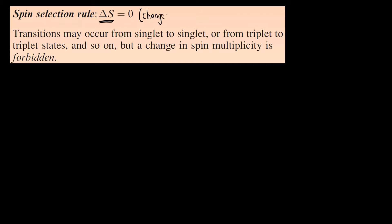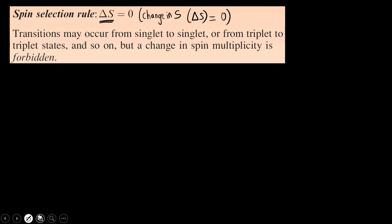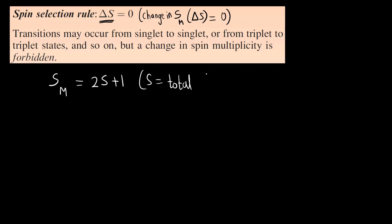Let us first understand the spin selection rule. The spin selection rule states that the change in spin — that is delta S, the change in spin multiplicity — should be zero. This means transitions can occur from singlet to singlet, or triplet to triplet states, but a change in spin multiplicity is forbidden. The spin multiplicity formula is 2S + 1, where S is the total spin, so if the total spin remains the same, spin multiplicity will also remain the same.